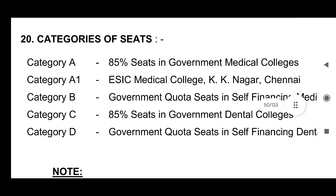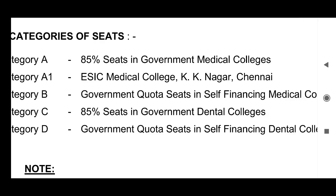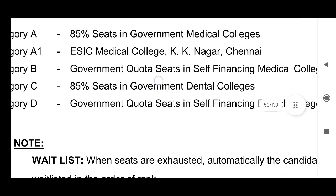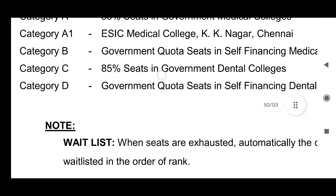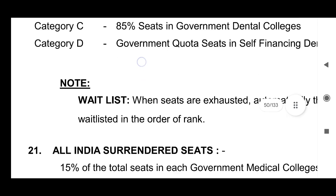Category A: 85% seats in government colleges. Category A1 is a subcategory — that is only for ESIC. There is a lot of fees difference, so before applying, before giving in the options, you should think about the fees of the ESIC. Category B: government quota in self-financing medical colleges. Category C: 85% seats in government dental colleges. Category D: government quota seats in self-financing dental colleges. These are the total five categories, and especially you have to be very careful about Category A1 for the MBBS.